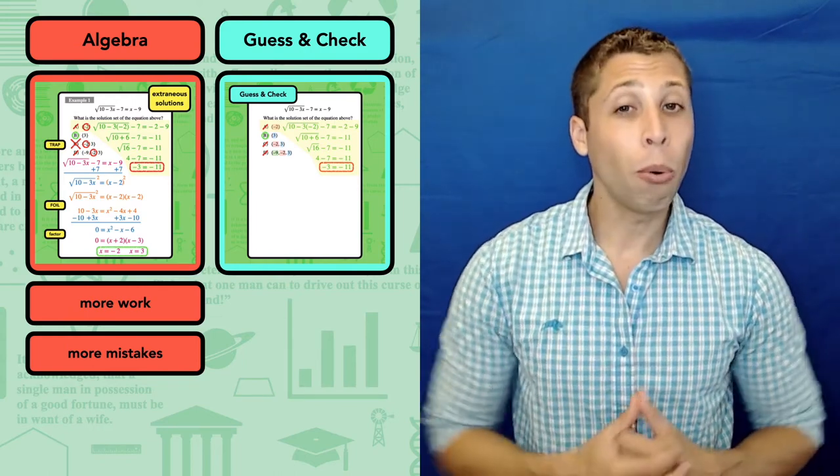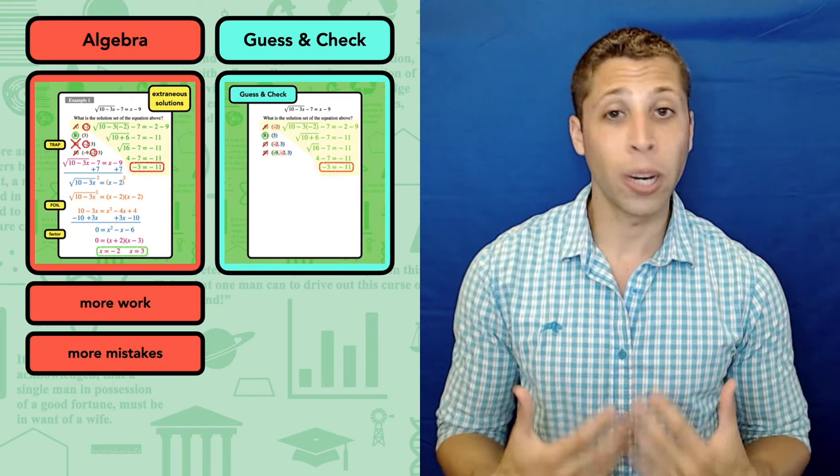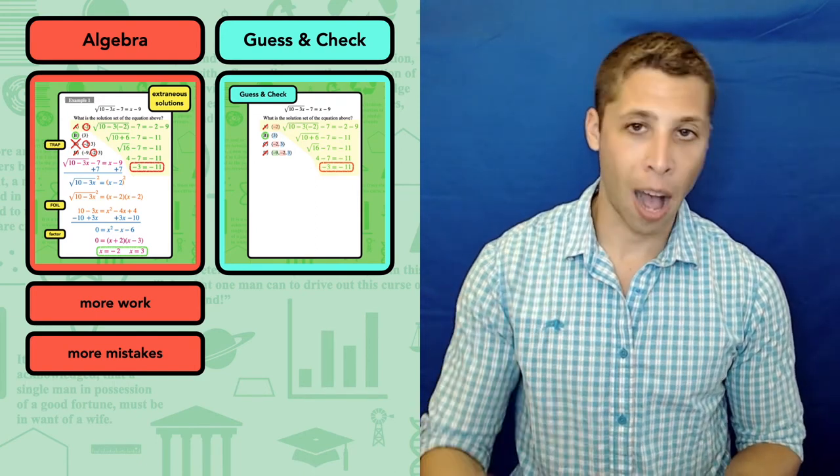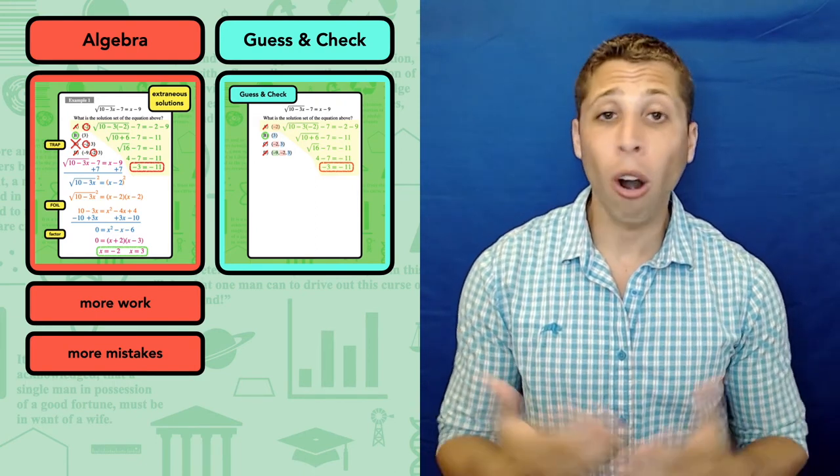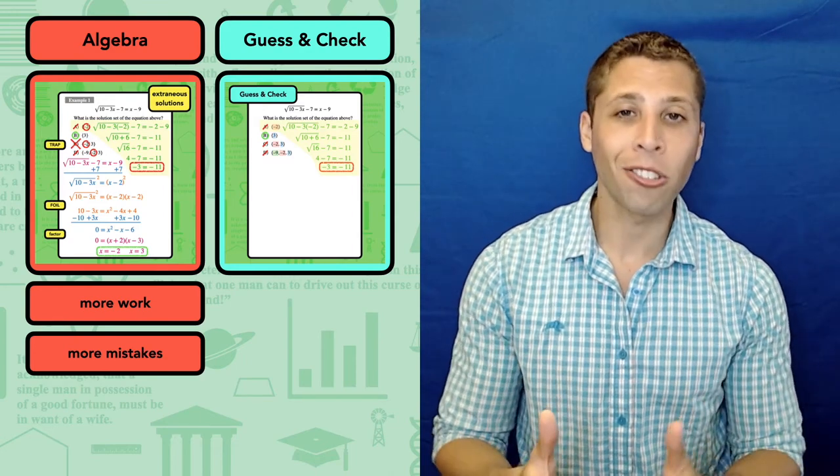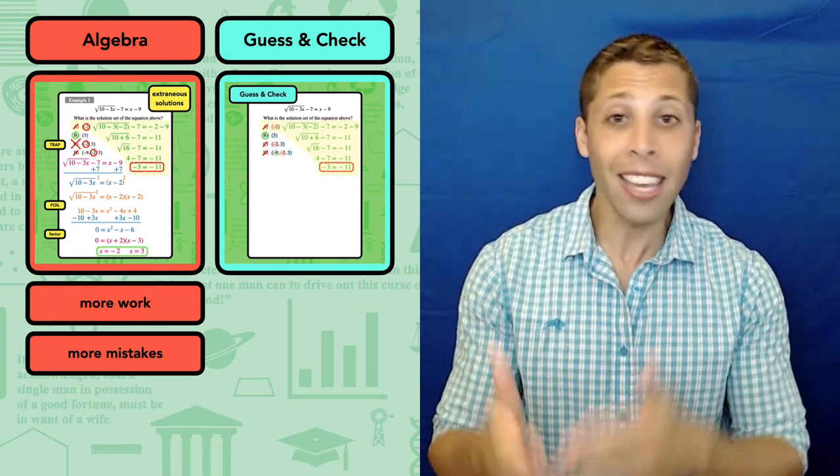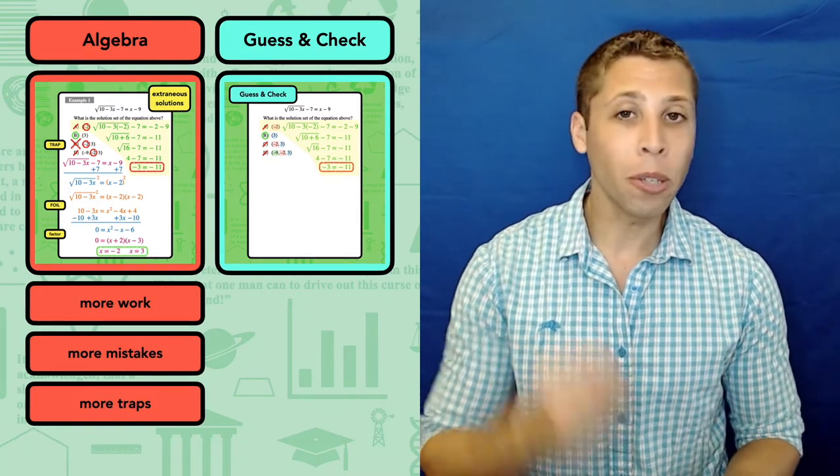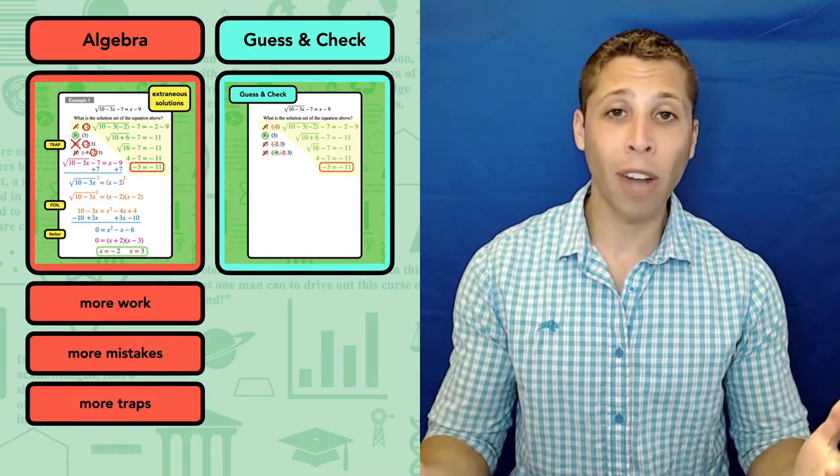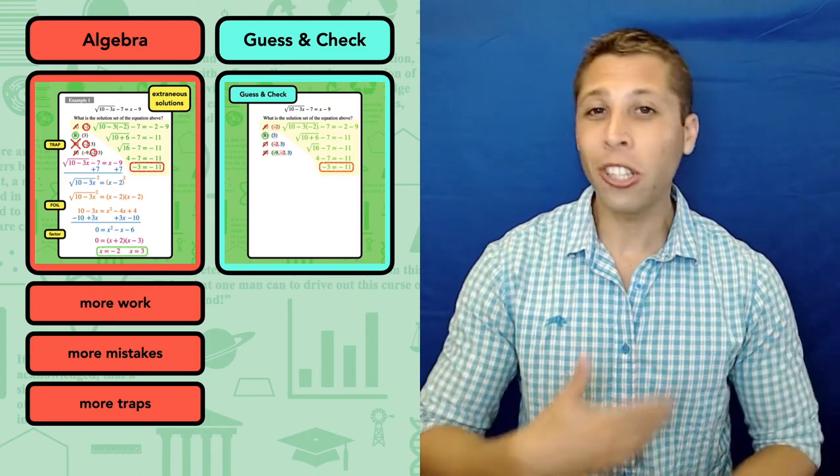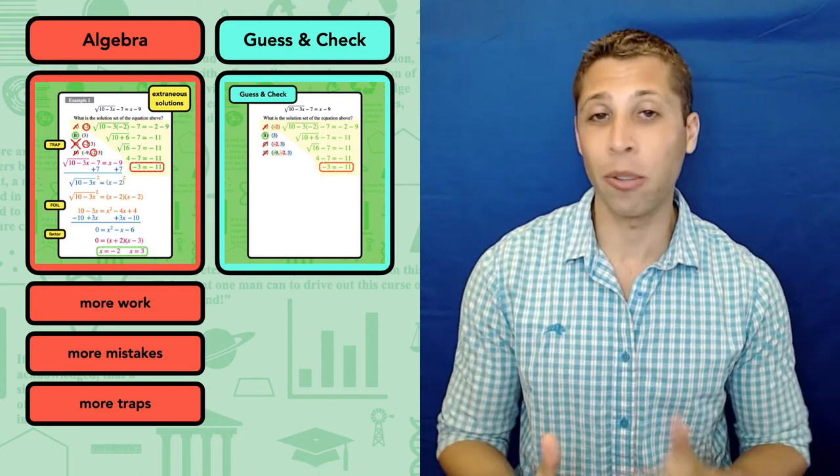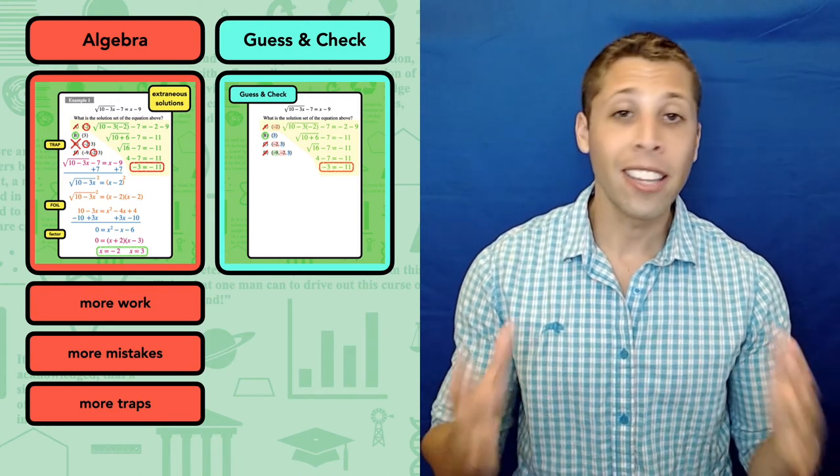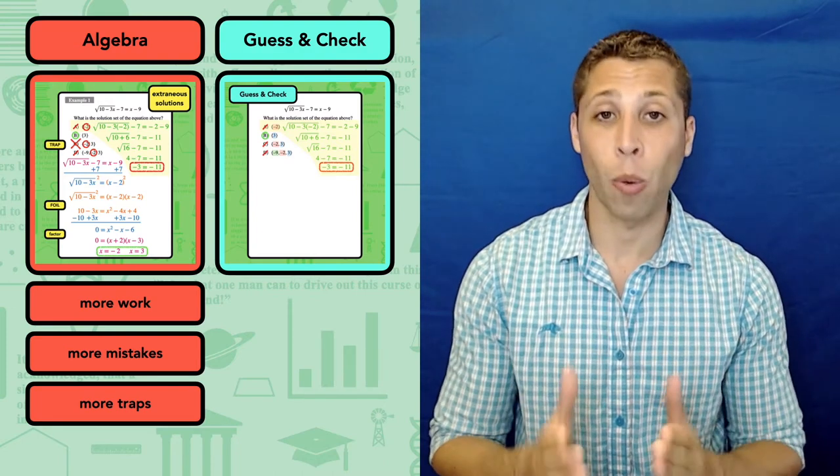But the most important reason that I prefer to avoid algebra is that I know how the SAT operates. The wrong answers aren't random. They're the answers that we are most likely to get if we make an algebra mistake. They're traps. But if we're doing arithmetic instead, then a lot of those traps don't really work on us. We'll see all of this again and again as we do the other questions in this lesson. The SAT math strategies can make the questions easier.